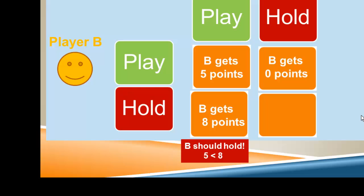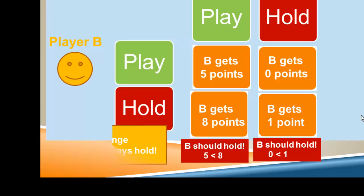Similarly, if player B plays their card and A holds, B will get zero points. But if they both hold, B will get one point. So what should B do? Well, zero is less than one, so again, player B should hold the card. Thinking this through, we find that orange should always hold her cards as well.